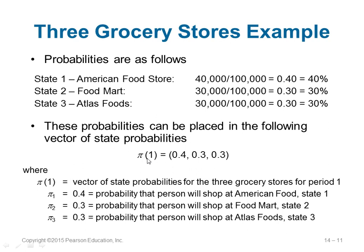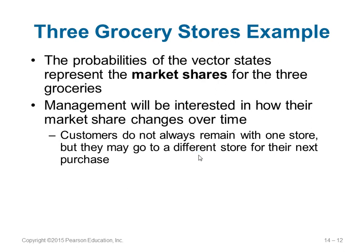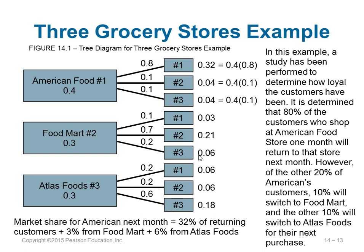This represents the current market share. Management wants to know whether a customer will return to the same store next month or go to a different store. These probabilities are represented using the matrix of transition probabilities. For example, 80 percent of customers who purchased at American Food Store this month will purchase there next month, 10 percent will go to Food Mart, and 10 percent will go to Atlas Foods.